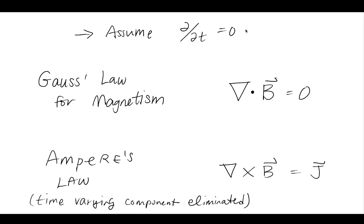The first equation is called Gauss's Law for Magnetism. An interpretation of this is that if you take the divergence of this vector, it's always equal to zero. This is in contrast to Gauss's Law for electrostatics, where if we took the divergence, we arrived at a charge density. For magnetism, you take the divergence, it's equal to zero — this is commonly interpreted as there being no existence of a magnetic particle.